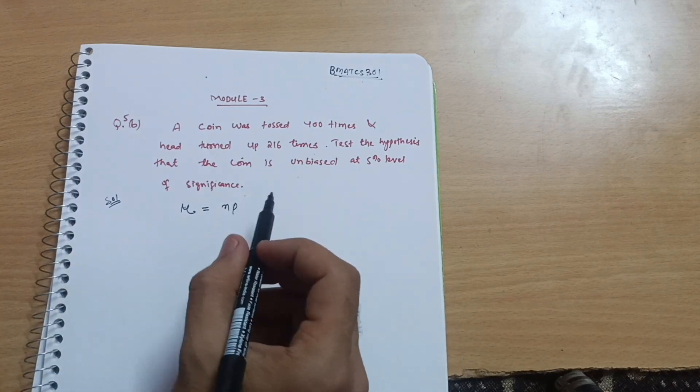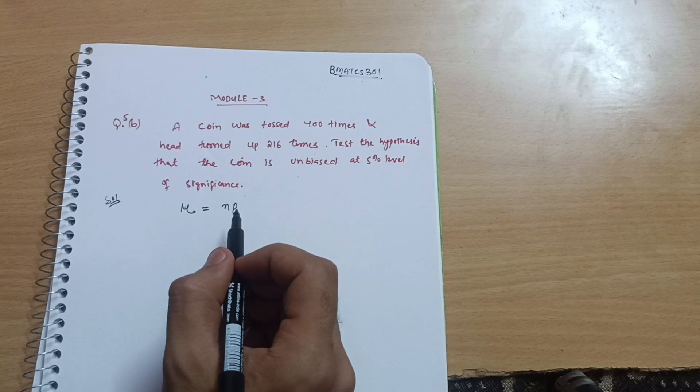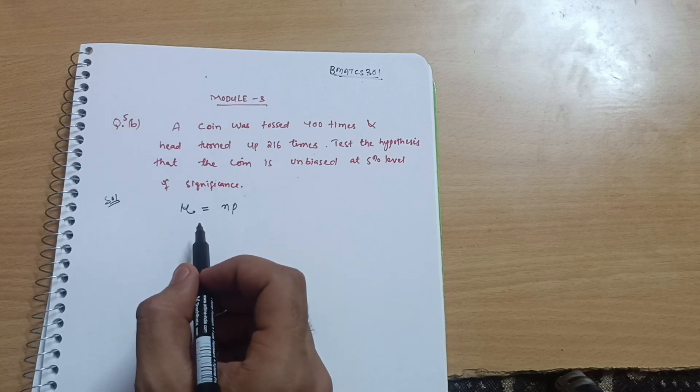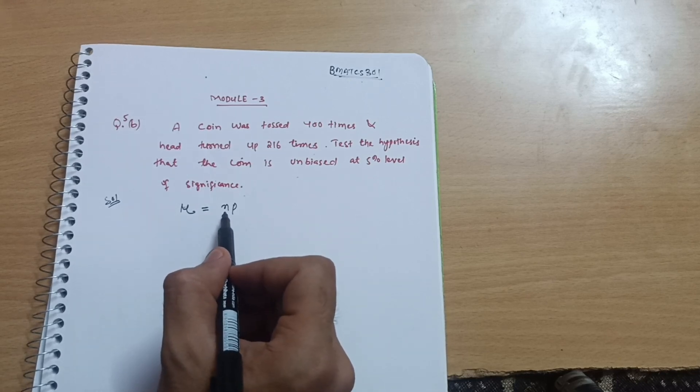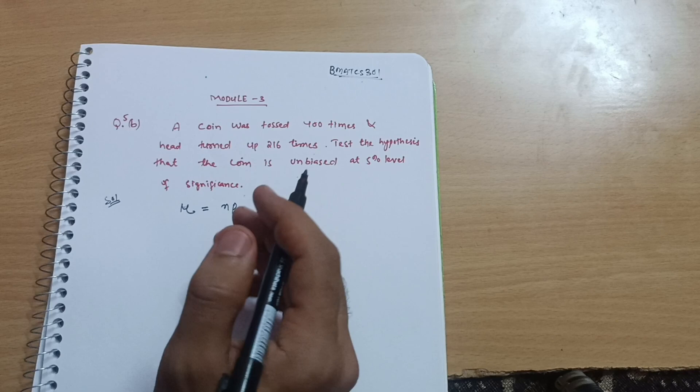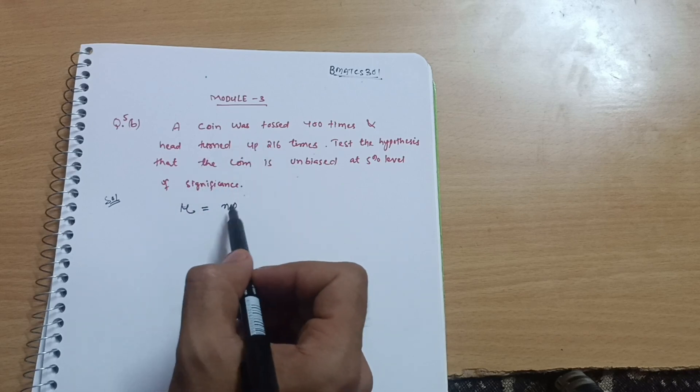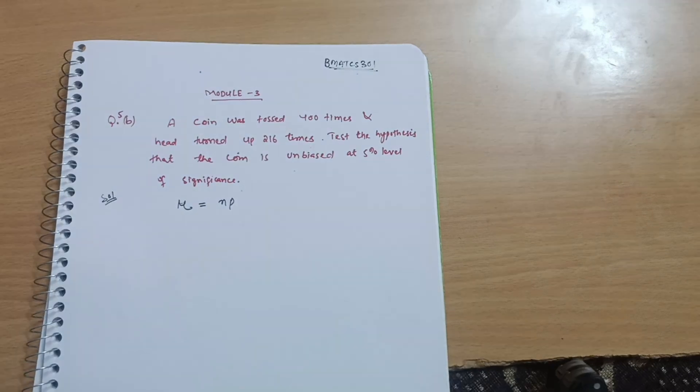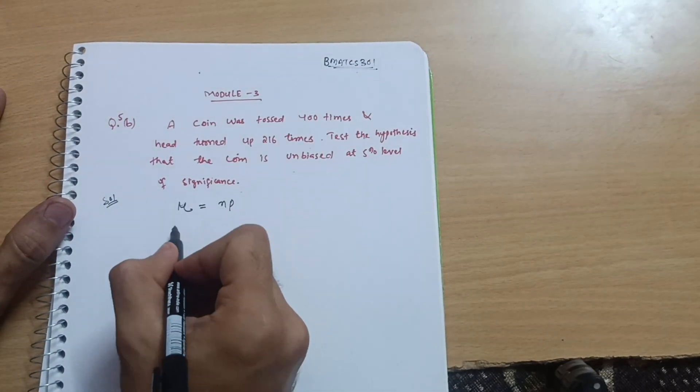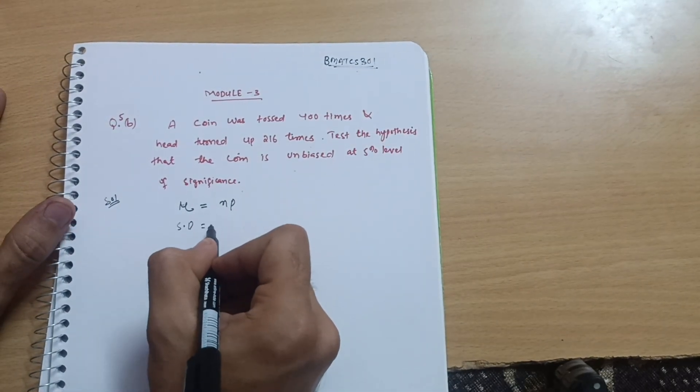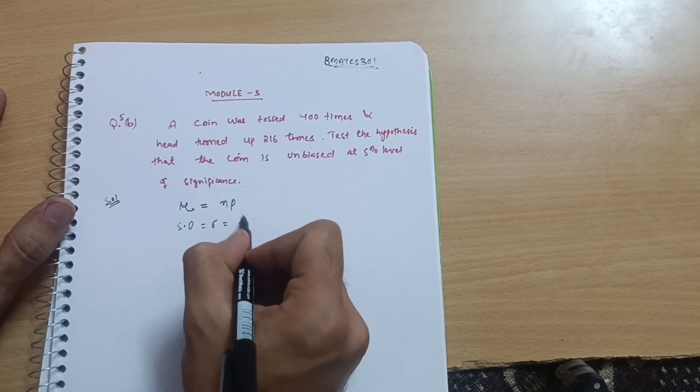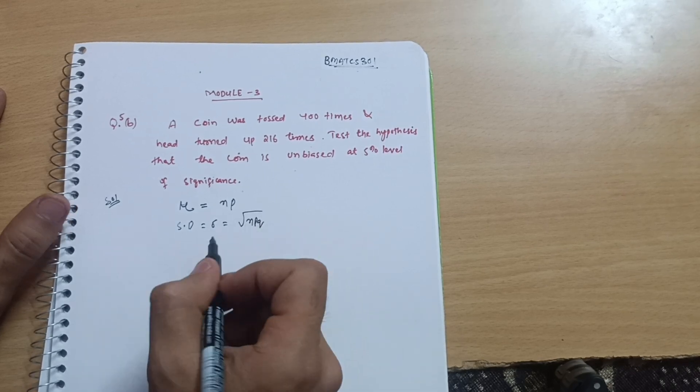For these type of questions you should keep three things in mind. First of all, you should calculate the mean, which is nothing but the multiplication of n into P. n is the number of times the coin is tossed, or it may be sometimes dice also. Next is the standard deviation, which is also represented as sigma equals under root of NPQ.